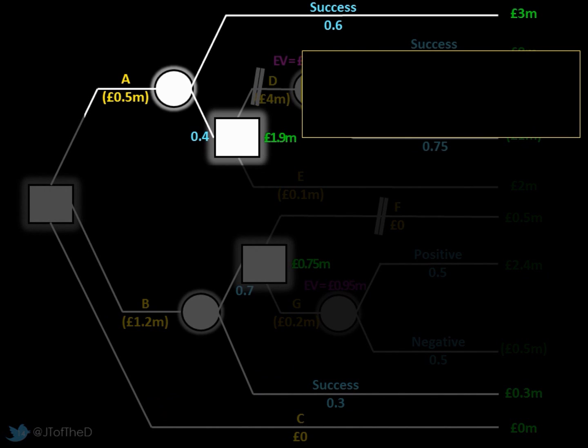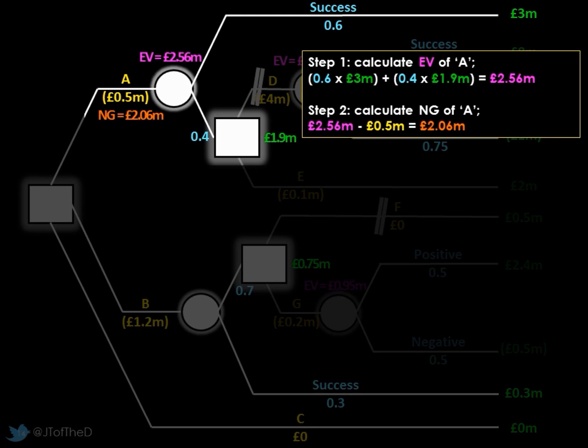If we start with A, we're going to look at our two possible outcomes. Success is probability of 0.6, therefore failure we can interpret as 0.4. The value of success is 3 million, value of failure 1.9 million. Using exactly the same maths as before, we're going to add together the combined weighted outcomes we have there. So 0.6 probability of 3 million plus 0.4 probability of 1.9 million would give us a net outcome - if we played this constantly, this is what would be the average - of 2.56 million pounds. Our second step is the net gain. It will cost us half a million to do A, so therefore 2.56 million pound extra revenue take away that half a million pounds of cost gives us a net gain of 2.06 million pounds.